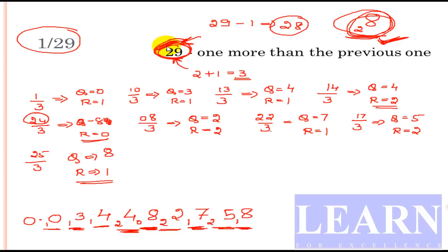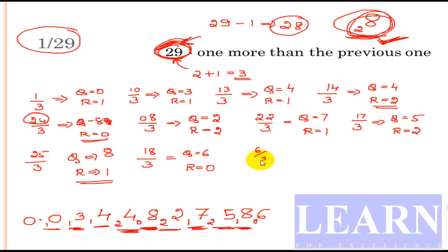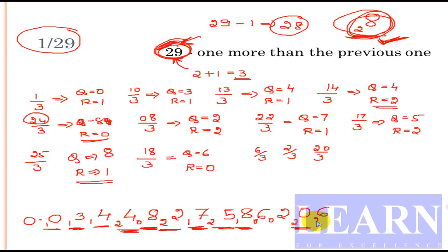Continuing: 18÷3 = 6 remainder 0, giving 06. Then 6÷3 = 2 remainder 0. Then 2÷3 = 0 remainder 2, giving 20. Then 20÷3 = 6 remainder 2. Then 26÷3 = 8 remainder 2. Now we have the pair: quotient 8, remainder 2, which forms the number 28 — one less than 29. This means the process is exactly half completed.